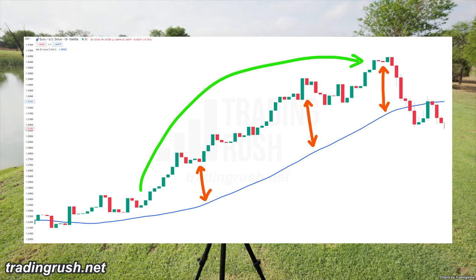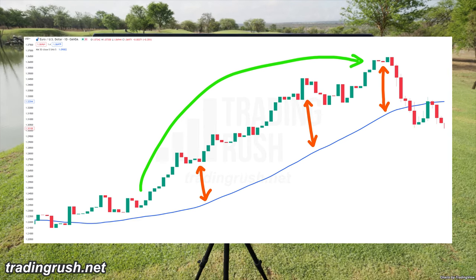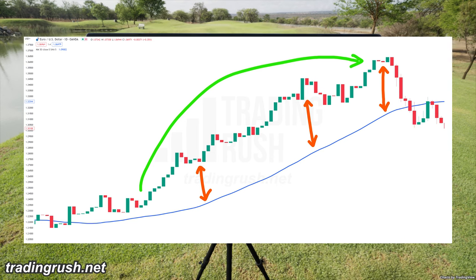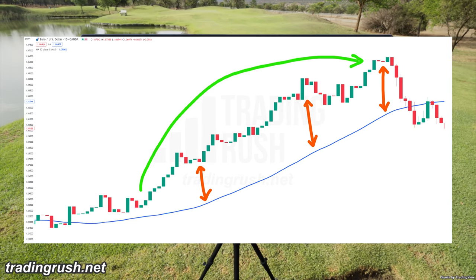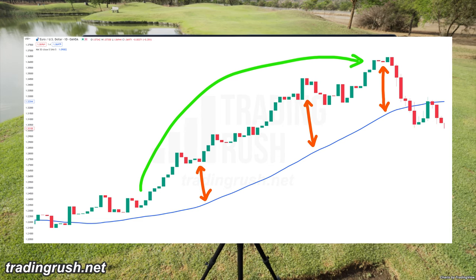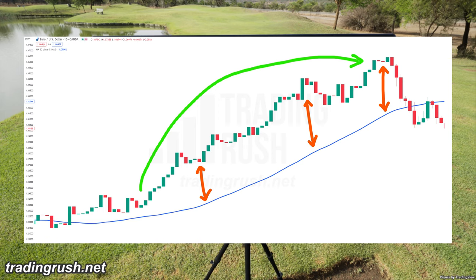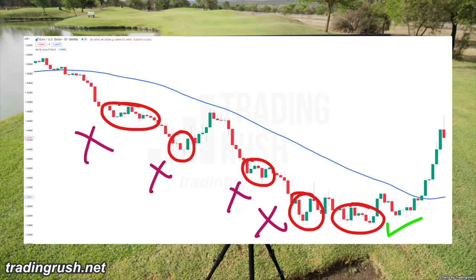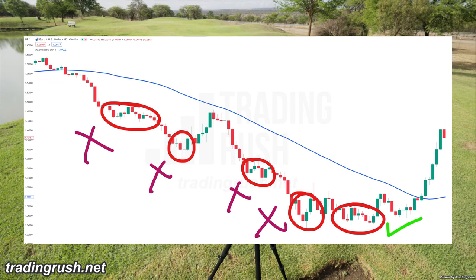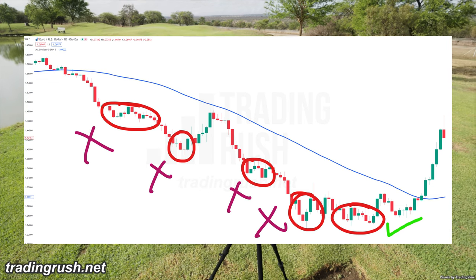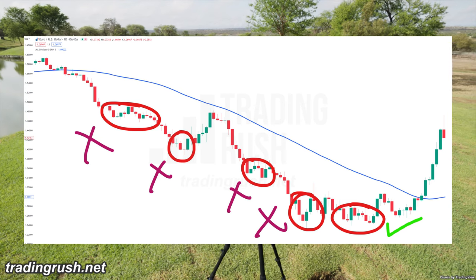Here's why. If there is an uptrend going on, the price can stay above the moving average for a long time, and the difference between the price and the moving average can get even bigger and stay that way for a while. In this case, the moving average saying overbought is simply not true. The same thing can happen when the price is in a downtrend — the price can stay below the moving average and give a false oversold signal.